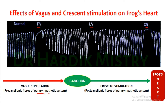Whenever we speak of vagus stimulation, we are going to stimulate the preganglionic fibers of the parasympathetic system. The ganglion is the collection of cell bodies of neurons outside the central nervous system, while nuclei is the collection of cell bodies inside the CNS. In the parasympathetic system, ganglia are present just near the affected organ. Crescent stimulation means we stimulate the postganglionic fibers of the parasympathetic system.